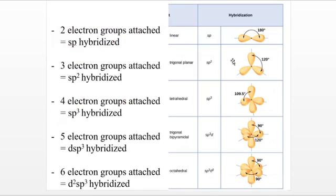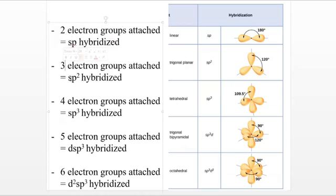The next concept is hybridization. The number of electron groups determines the hybridization. Two electron groups: SP hybridized — one S and one P, two letters, two groups. Three electron groups: SP2 — think SPP, three letters. Four electron groups: SP3 — like methane. Five electron groups: DSP3, five letters. Six electron groups: D2SP3, six letters. Memorize that pattern and you can figure out the hybridization of any atom based on its number of electron groups.